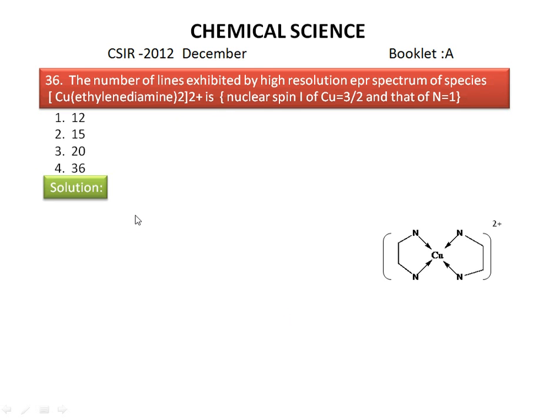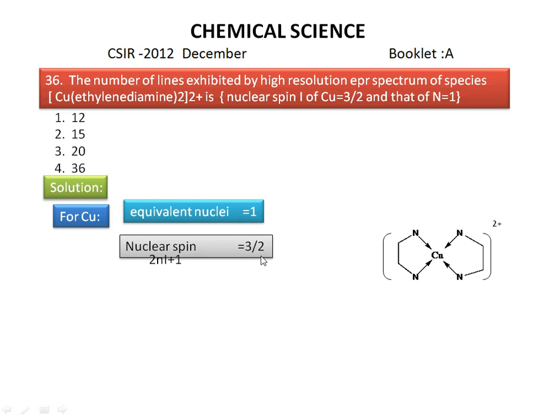First we calculate the number of EPR lines for copper. This is the formula to find out the number of lines in the spectrum: 2nI plus 1, where n is the number of equivalent nuclei and I is the nuclear spin. For copper we have only 1 copper, so its equivalent nuclei is 1. Its nuclear spin value is 3/2. Now substitute these two values in the equation: 2×1×3/2 + 1 = 4. So we get 4 lines for copper.